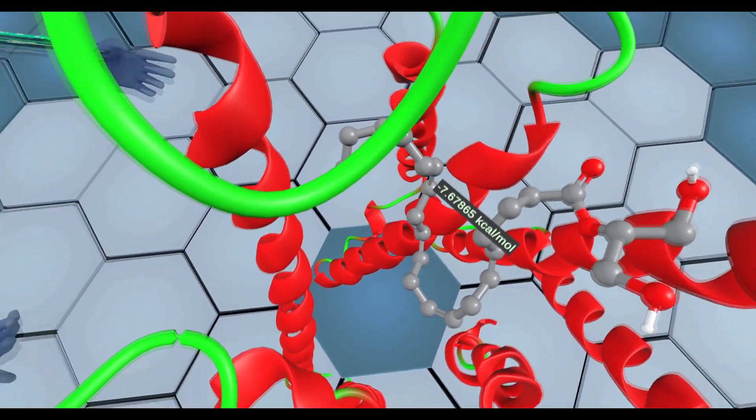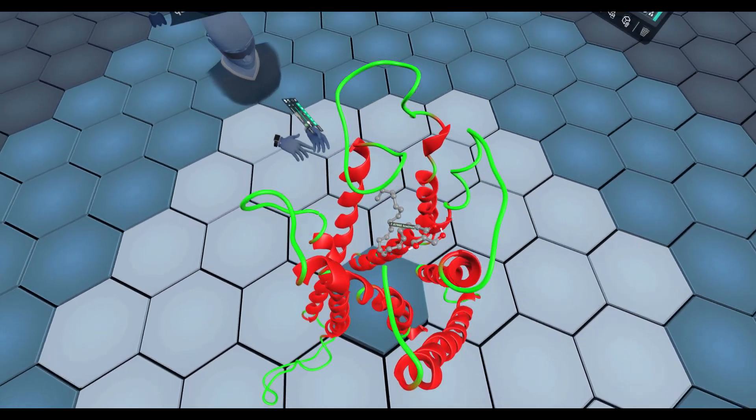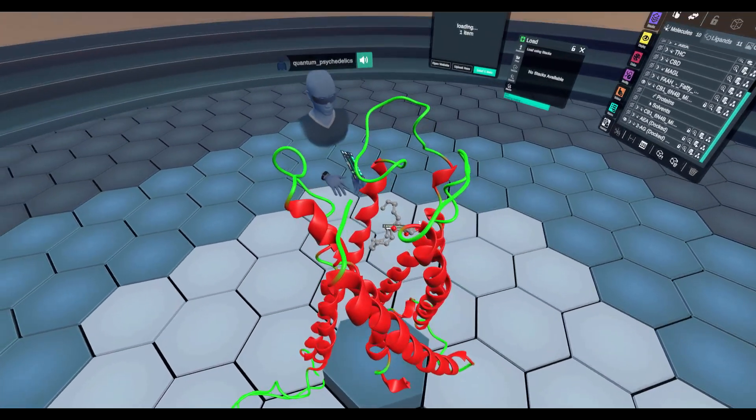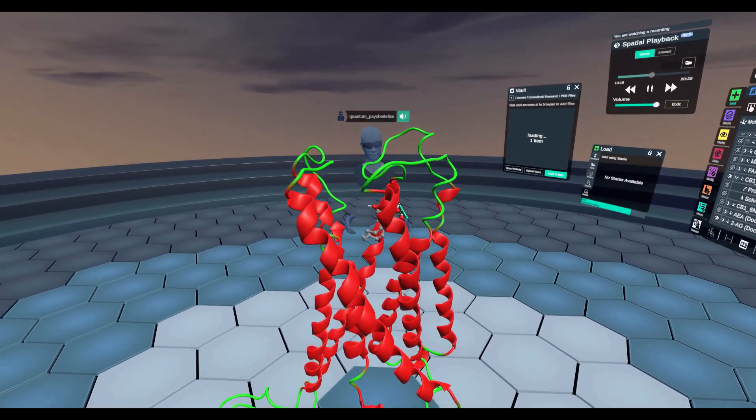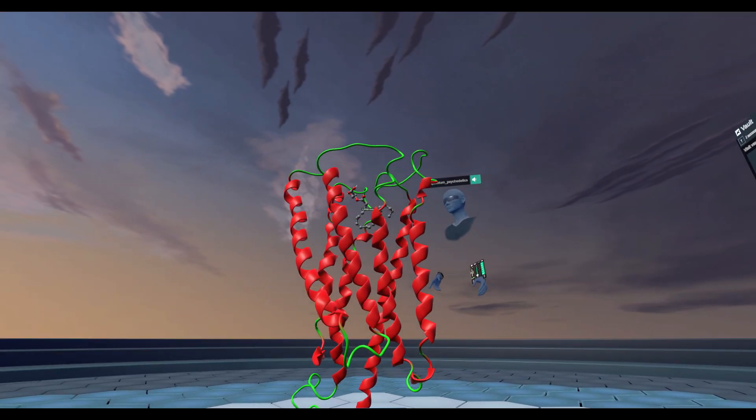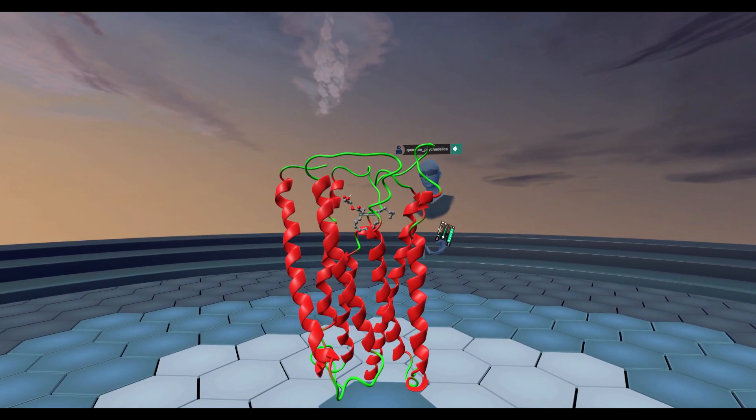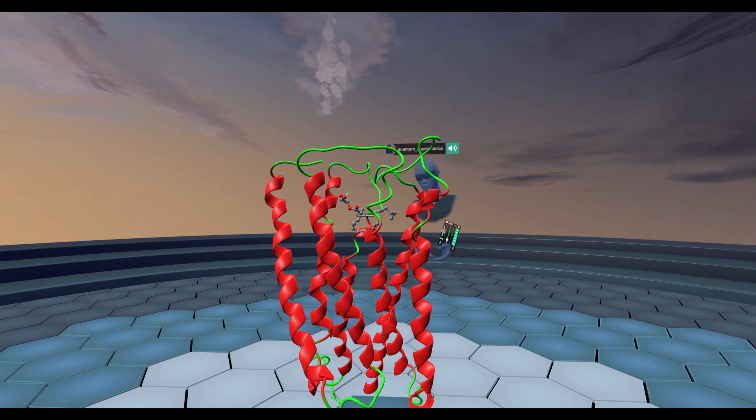Now that we've looked at the receptors of the endocannabinoid system, CB-1 and CB-2 receptor, to be fair we didn't look at CB-2 receptor, but the sequence homology is very similar to CB-1 so they almost look identical. We looked at the receptors and the two endogenous ligands that activate the endocannabinoid system. Now let's look at the enzymes that break down anandamide and arachidonylglycerol.